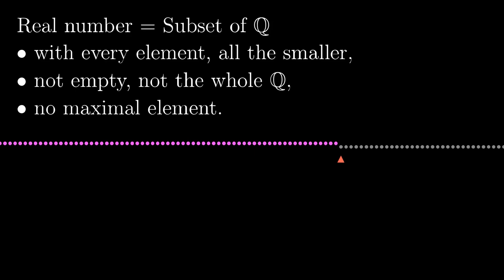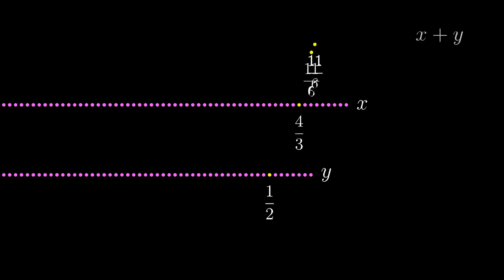With real numbers defined this way, it is pretty easy to define addition. We want to add up two such sets, x and y, so we simply add them up element-wise. Let's say there are 4/3 in x and 1/2 in y, so we put their sum 11/6 to the result. We do this for every pair of rational numbers taken from x and y.